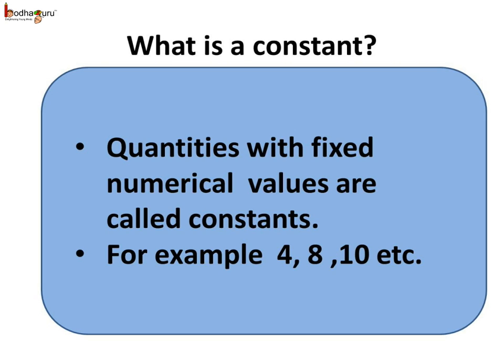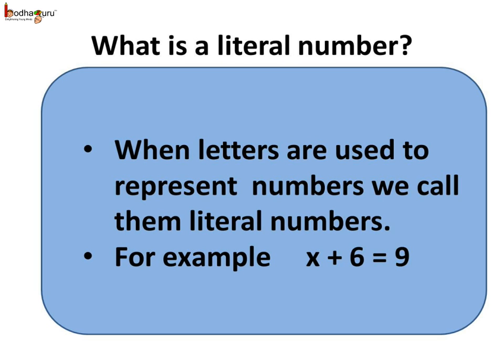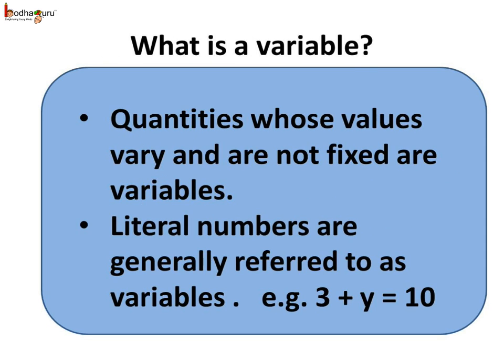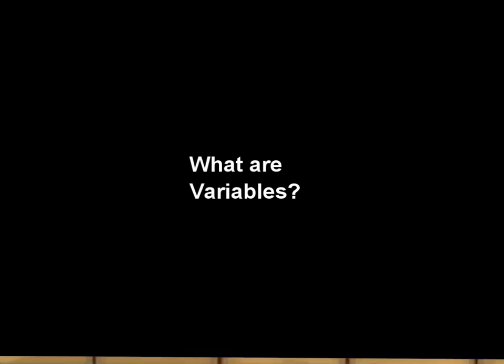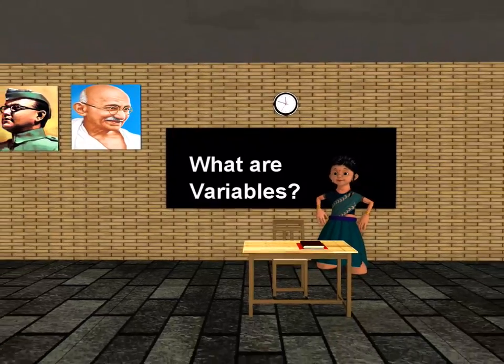So to sum up what we learned today: What is a constant? Quantities with fixed numerical values are called constants — for example, 4, 8, 10, etc. What is a literal number? When letters are used to represent numbers, we call them literal numbers — for example, in x plus 6 equals 9, x is a literal number. What are variables? Quantities whose values vary and are not fixed are called variables. The literal numbers are generally referred to as variables — for example, in 3 plus y equals 10, y is a variable. So that was all about variables. Bye-bye, children.